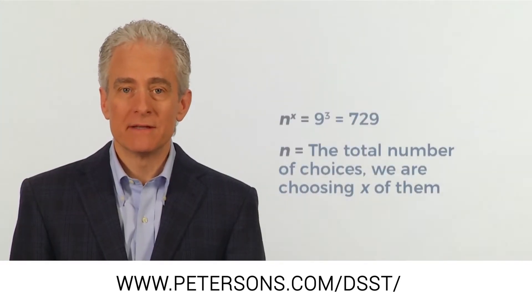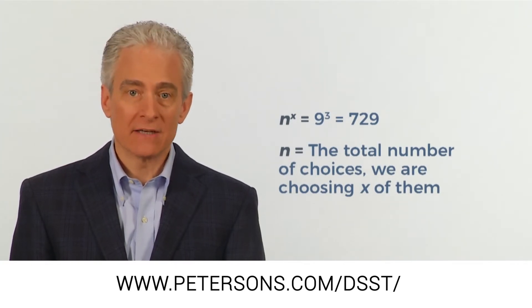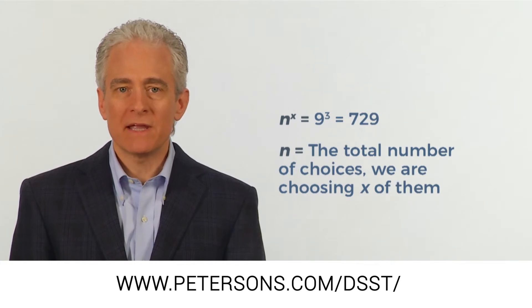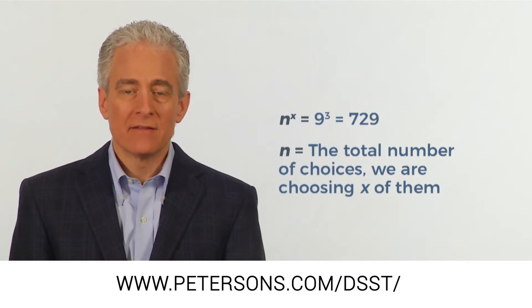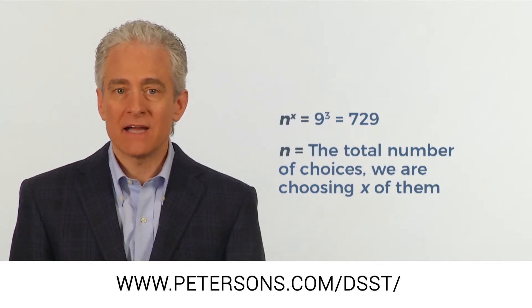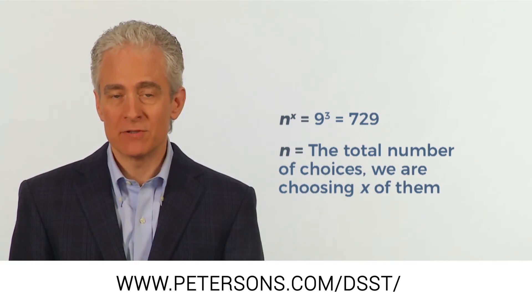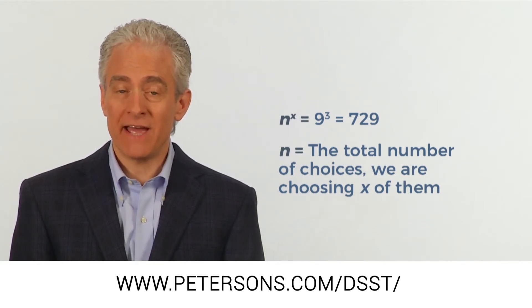Permutations with repetition are pretty simple. If there are n choices, then every single time there are n choices. So when picking three numbers from 1 through 9, there are 9 times 9 times 9, or 729 permutations. They add up pretty fast.